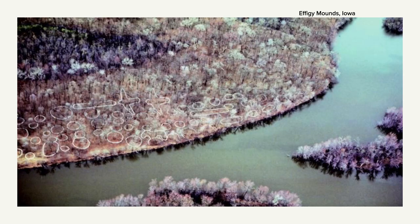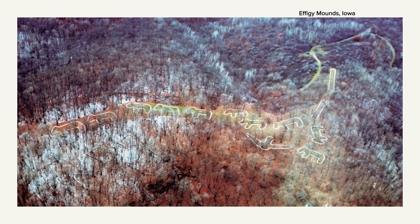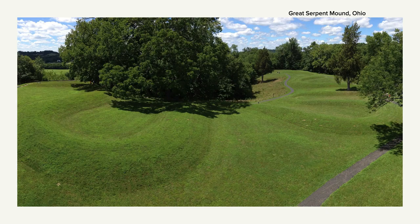The Effigy Mounds in Iowa — all those things in white are human-made shapes, and some of them look kind of like airplanes, though they're probably supposed to be birds. Here's another section of effigy mounds with all these animal-like figures. We don't know the purpose — why were they made? Or here's the Great Serpent Mound in Ohio. If you look at the grass, you can see that serpent-like shape — that's man-made. Nature didn't make that. Why did they do it? Again, we don't know.